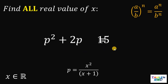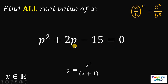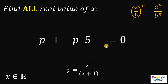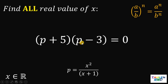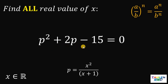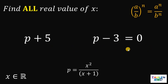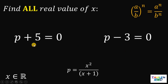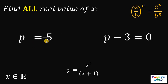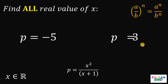Let's equate this to 0 and factor the quadratic equation. Factoring gives us (p+5)(p−3) = 0, which expands to p²+2p−15. Since it equals 0, at least one factor must equal 0. Solving: from (p+5)=0, we get p = −5, and from (p−3)=0, we get p = 3.